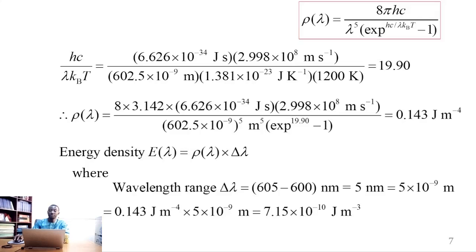Next, we substitute the energy distribution there, and then the wavelength range here. That gives 7.15 times 10 to the power of negative 10 joules per meter cube as the energy density.